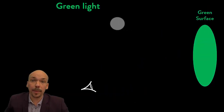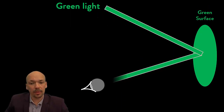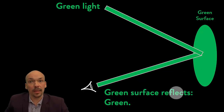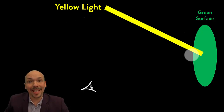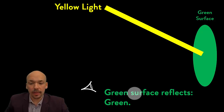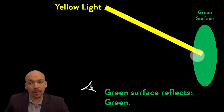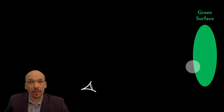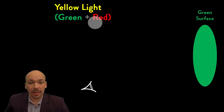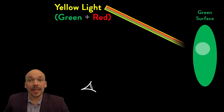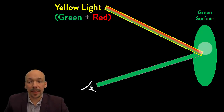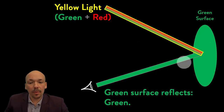Another example: if we have a green surface and we have green light, then the green light will be reflected by the green surface and we can see it as green. Now, if you have purely yellow light — not a combination of red and green, but purely yellow light — then the green surface cannot reflect it because green is a primary color. It can reflect only green light, not yellow light, so you will not see it. But if we make yellow light from green and red, then the green part of that light will be reflected. The surface cannot reflect the red part, only the green part, so we will see the green surface as green.